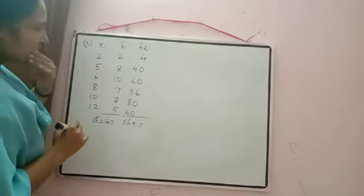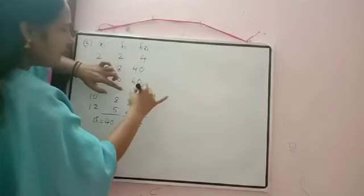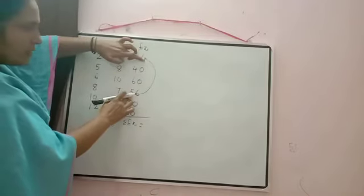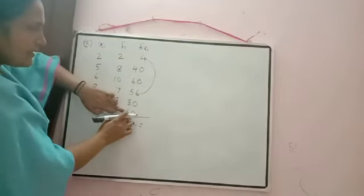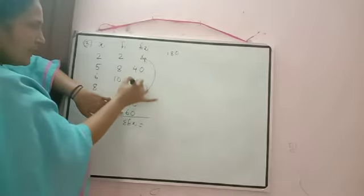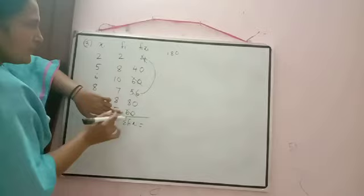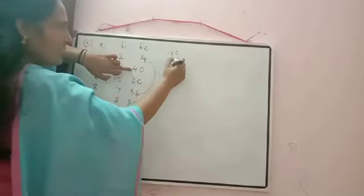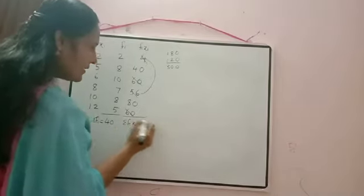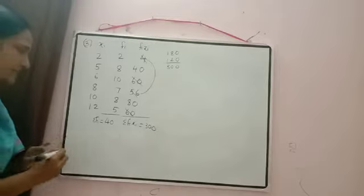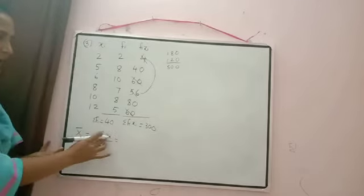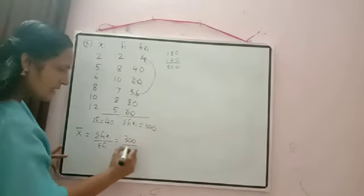Now calculate Σfᵢxᵢ: 56+4=60, 60+60=120, 120+60=180, 80+40=120, 180+120=300. So Σfᵢxᵢ = 300. Now calculate the mean: x̄ = Σfᵢxᵢ / Σfᵢ = 300/40. Simplifying: 300/40 = 15/2 = 7.5. Since this is a decimal and we need to do subtraction, we take the approximate value x̄ ≈ 8.